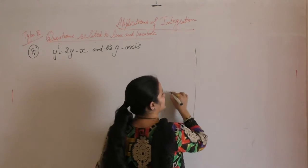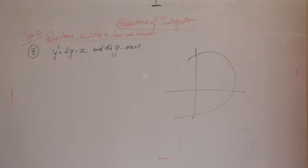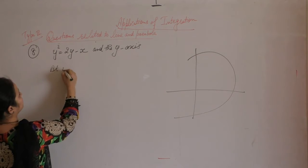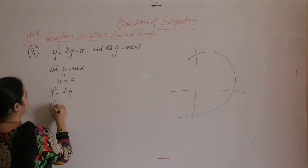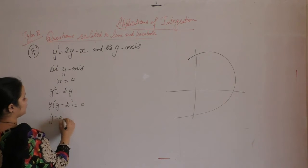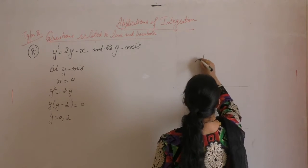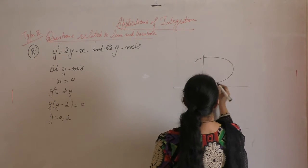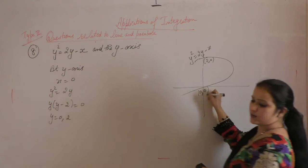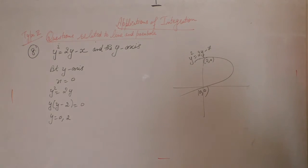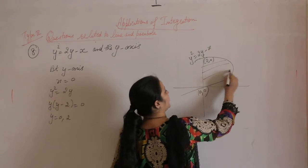This is the y-axis. Our curve is along this. At the y-axis, x is 0, so y² = 2y, giving points y = 0 and y = 2. Therefore this curve passes through the origin. This is the curve y² = 2y − x, with y = 2 and y = 0 as the boundary points. We need to find the area of the shaded portion.